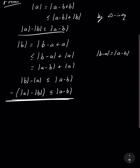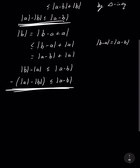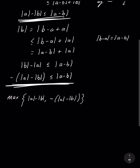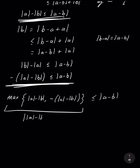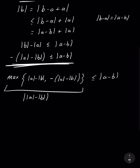So we have both inequalities: |a| - |b| ≤ |a - b| and -(|a| - |b|) ≤ |a - b|. Using the same argument as with the triangle inequality, the maximum of these two expressions must be less than or equal to |a - b|. But this maximum is just ||a| - |b||, so the result is proven.